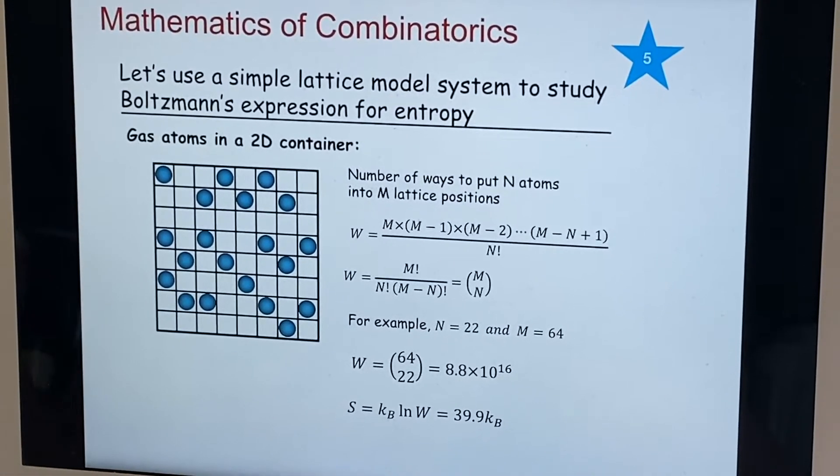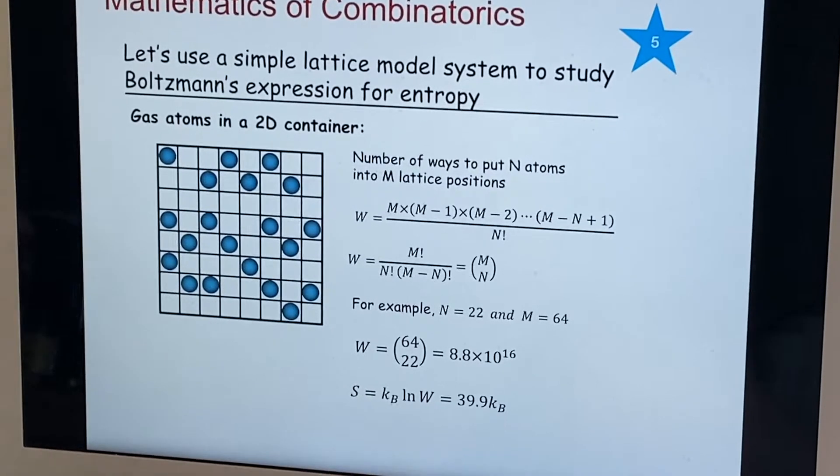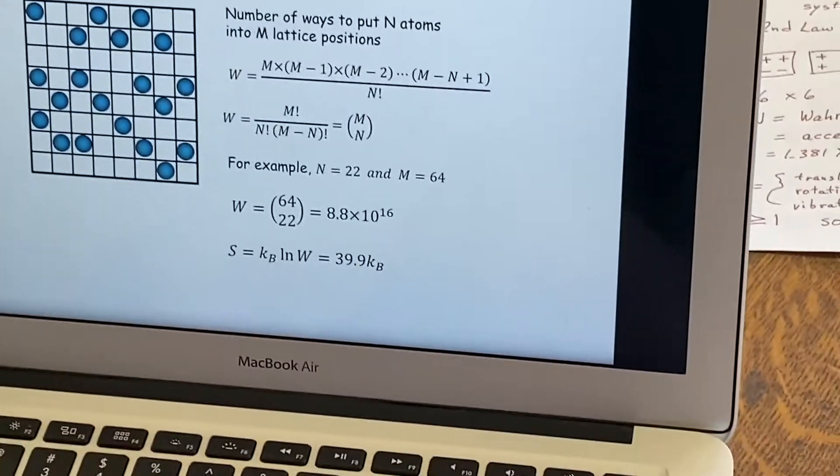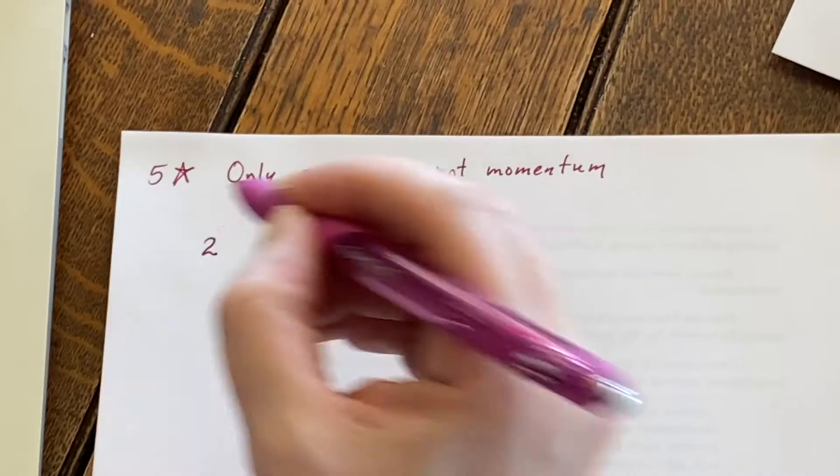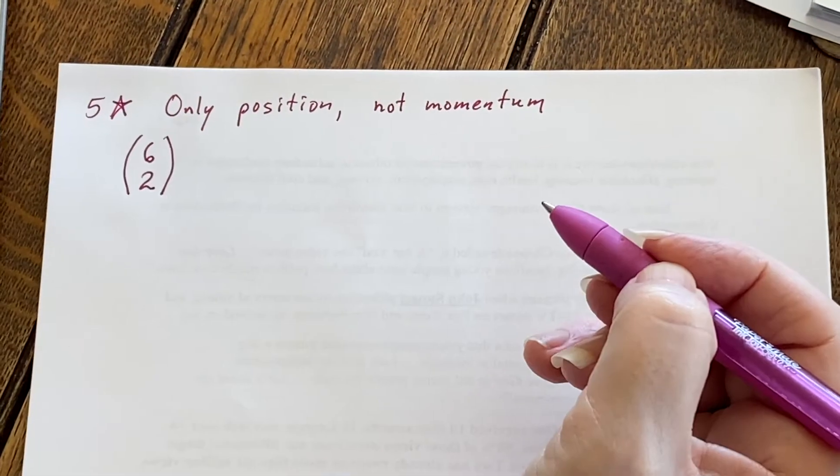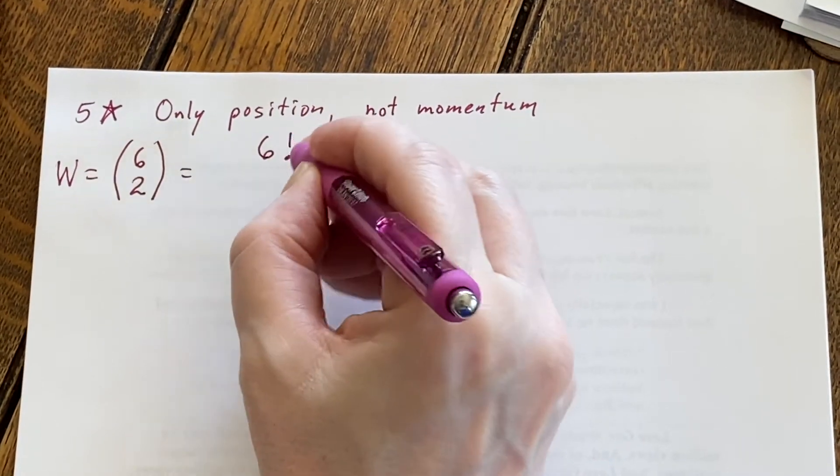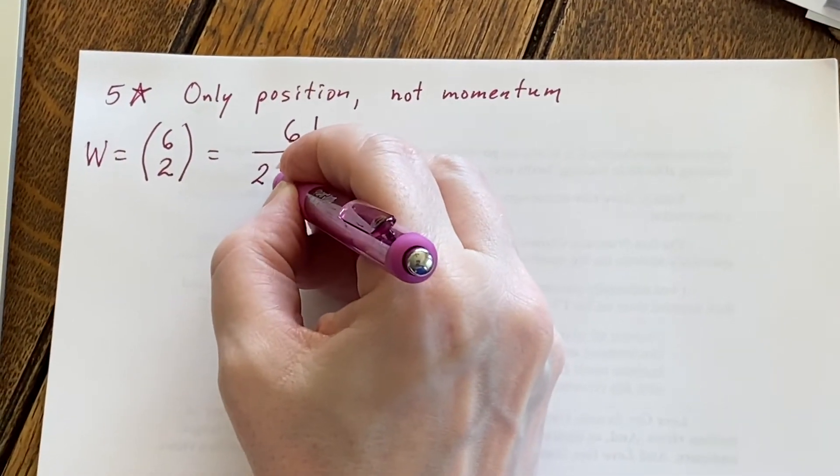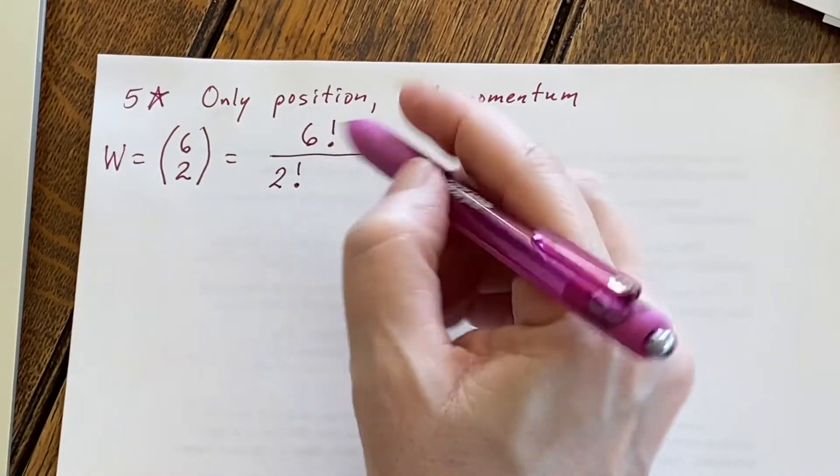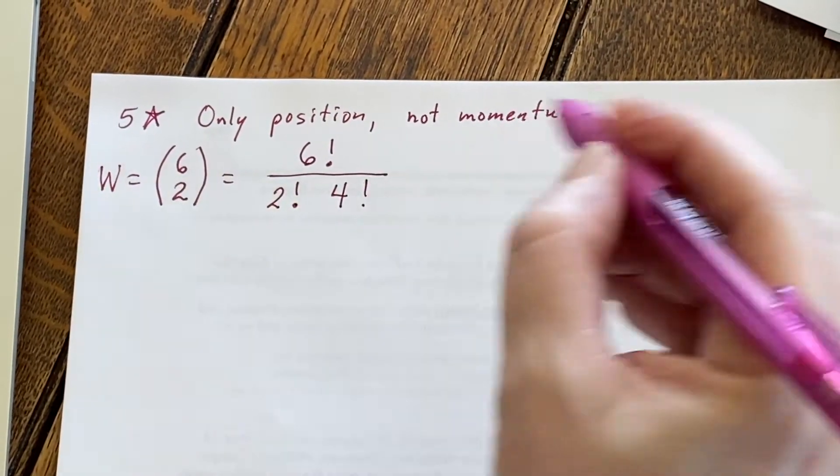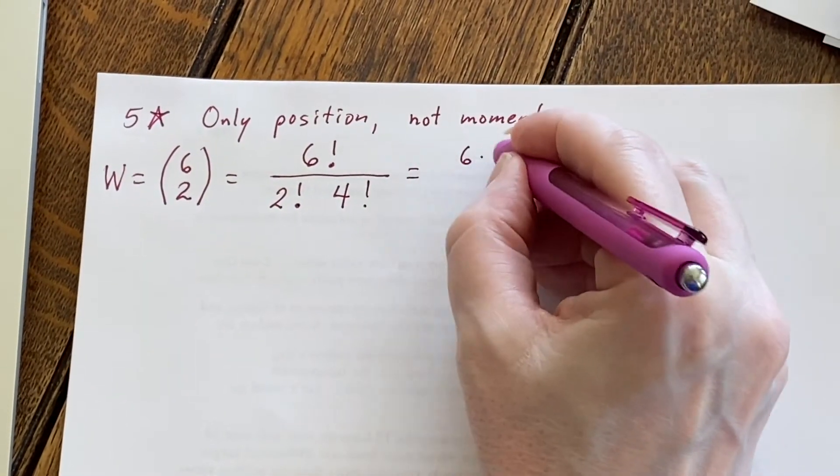Let me do another combinatoric one. Let me do a simple one. Let's say that I have two items and they have to go in six positions. I want to know what W is. Well, I would take the six and say factorial. I would take the two and say factorial. And then I would say six minus two is four and factorial.